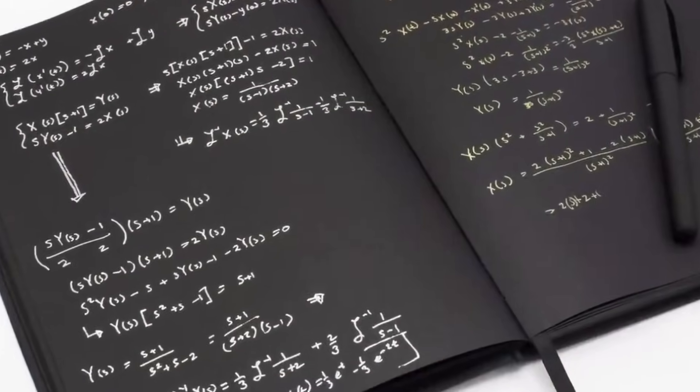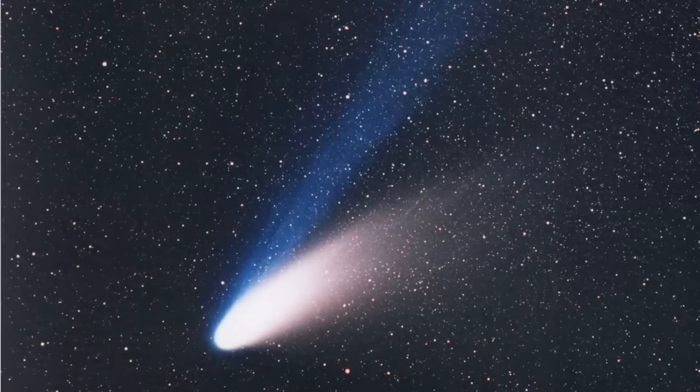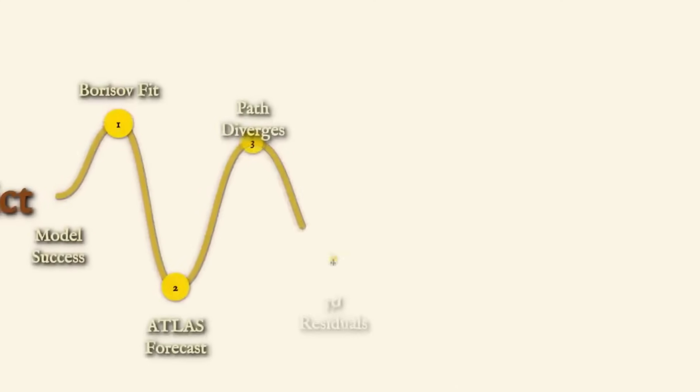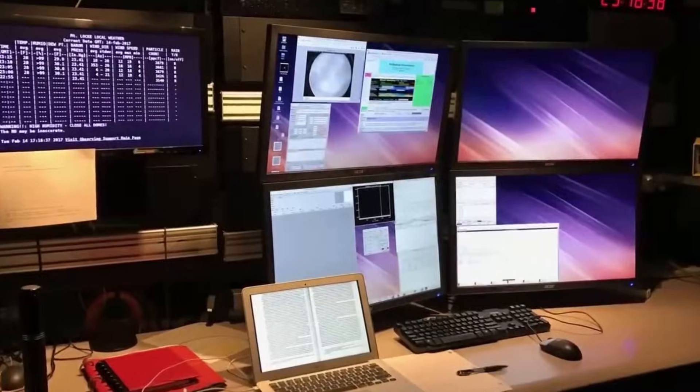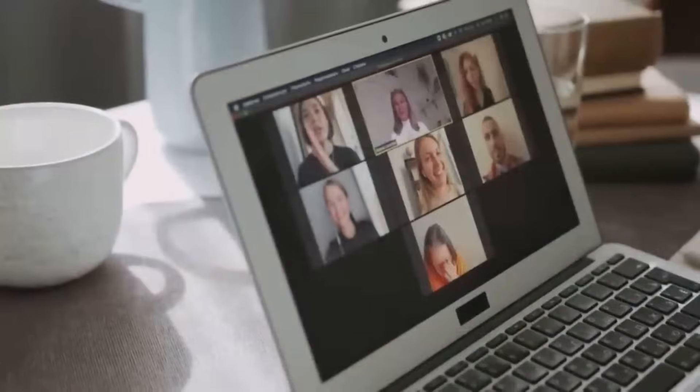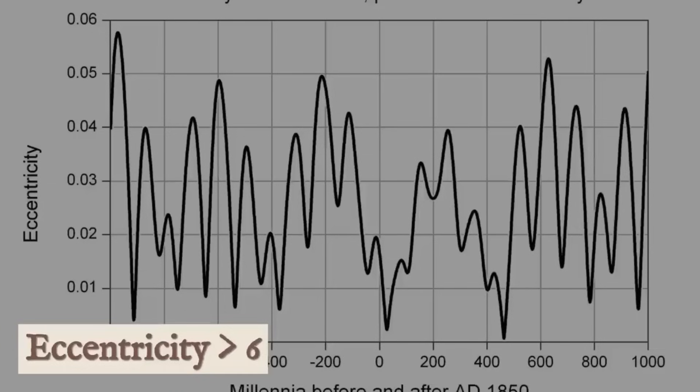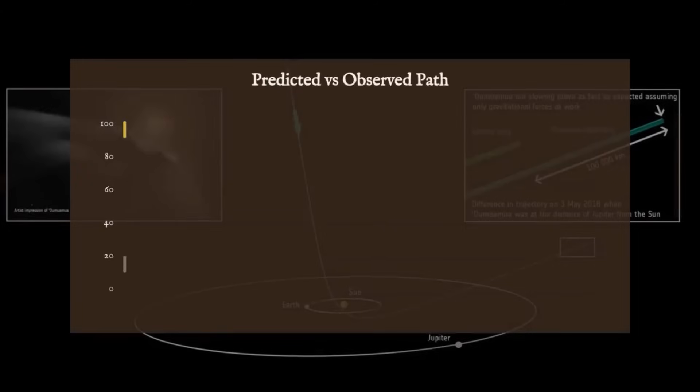This pattern has held true for every single comet scientists have ever studied. Whether it's a famous comet like Halley's Comet that visits us every 76 years, or a visitor from the edge of our solar system, they all follow the same basic recipe: water first, carbon dioxide second, carbon monoxide third. It's been so consistent that astronomers started to think this was just how all comets worked, no matter where they came from. Then came the interstellar visitors, and everything changed.